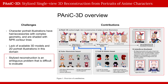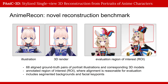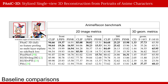Lastly, we confront the problem of evaluation. Stylized reconstruction on characters is an incredibly ambiguous task. We provide Anime Recon, a novel reconstruction benchmark, with 68 aligned ground truth pairs of portrait illustrations and corresponding 3D models. These are annotated with regions of interest where alignment is reasonable for evaluation, and includes segmented backgrounds and facial keypoints. As we're able to treat the aligned 3D models as ground truth reconstructions of 2D illustrations across the 2D-3D domain gap, we can now evaluate reconstruction metrics in 2D from novel views, as well as in 3D directly from the geometry.